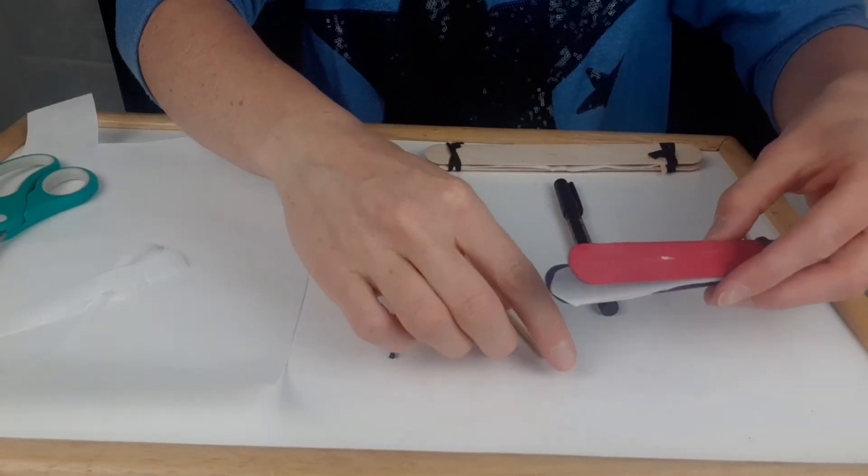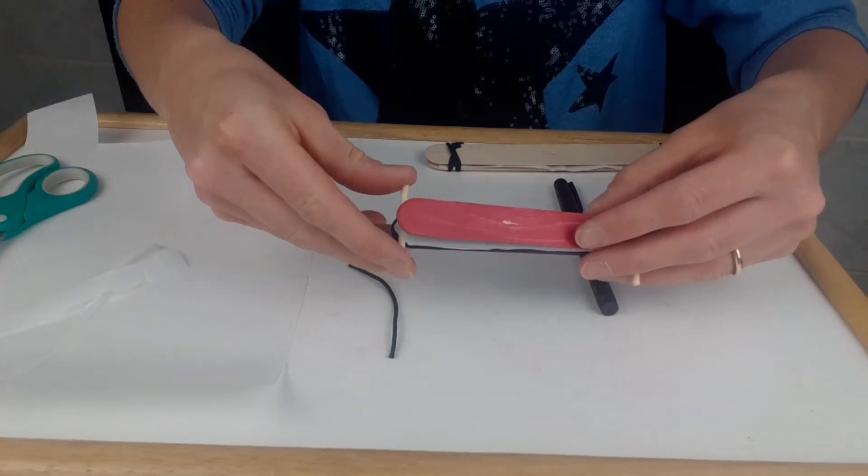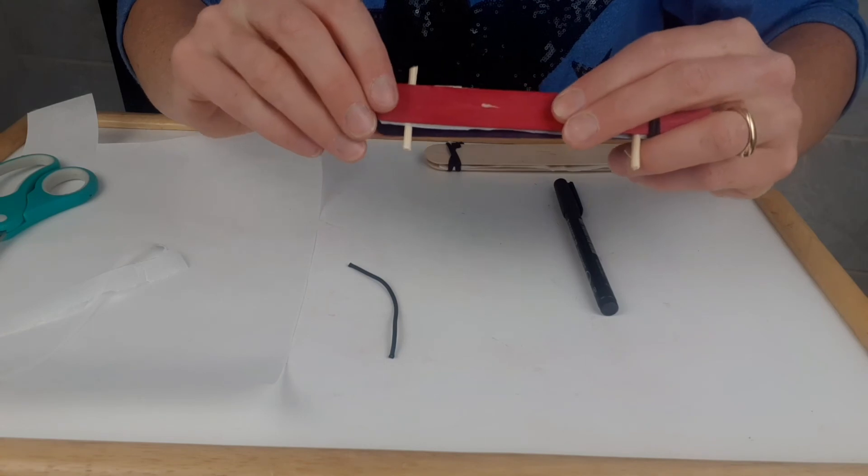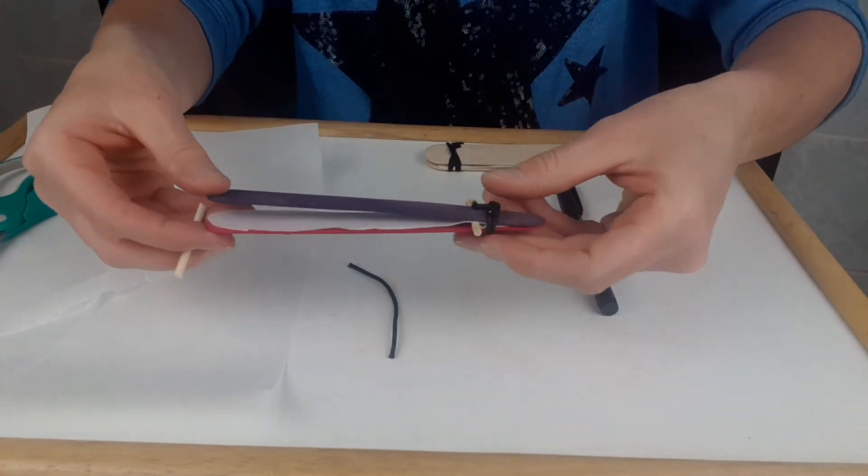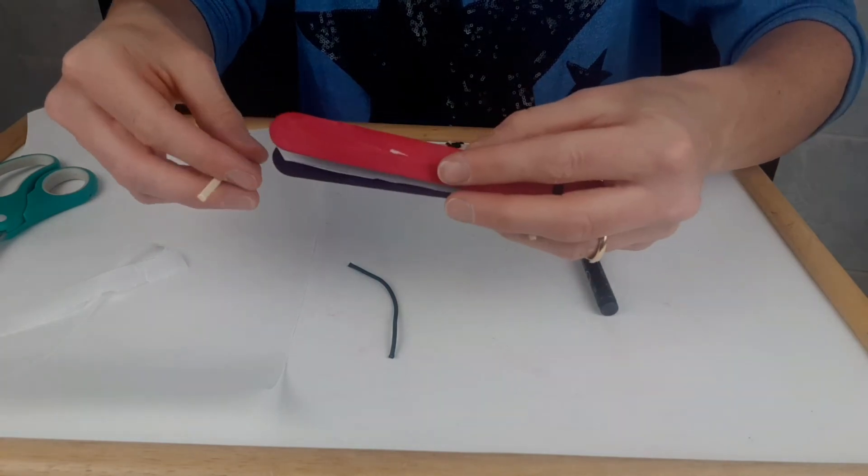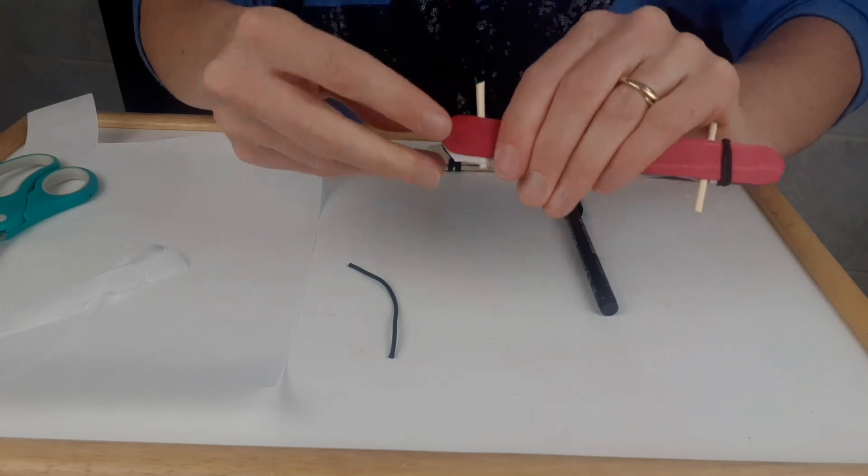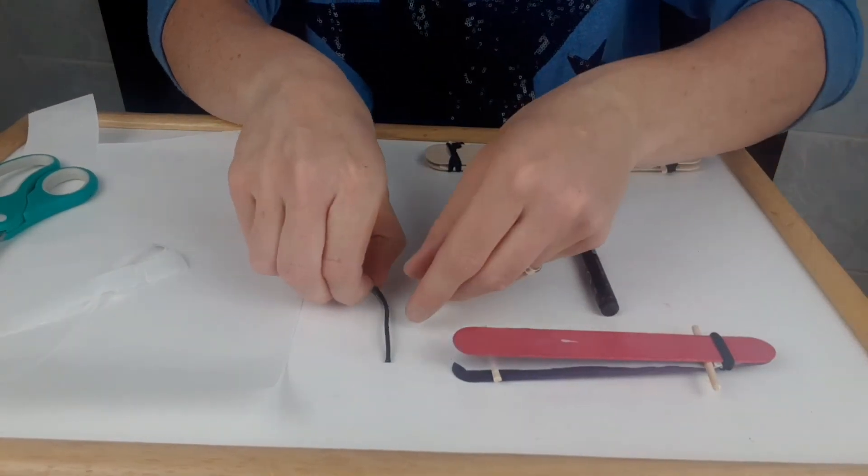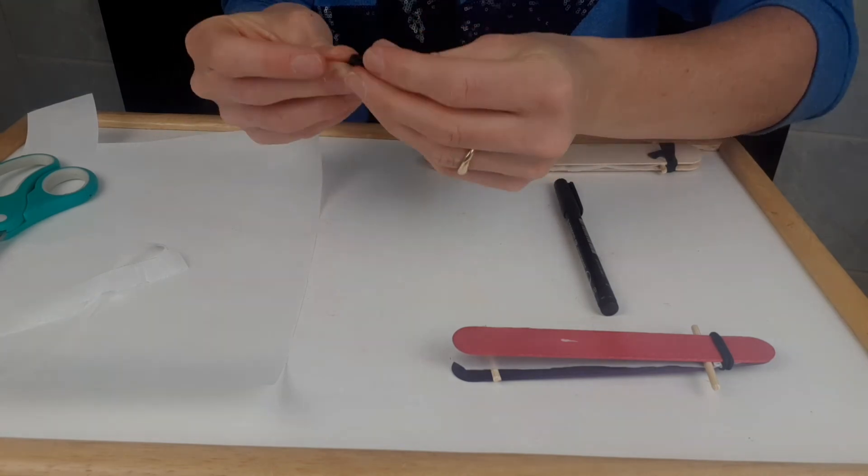Now on the other end, we're going to take our other little piece of wood and put it underneath. This is an important tip. Ideally, you want to have one piece of wood on top of the paper and one on the underside. There we go. We're going to take our elastic from the other end and secure it just like we did on the first end.